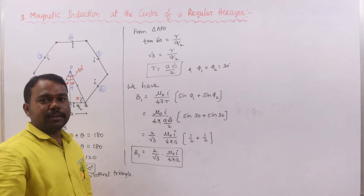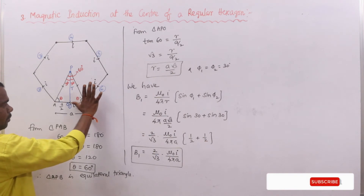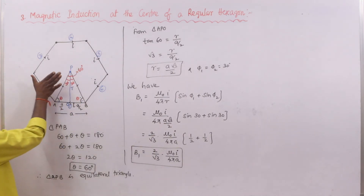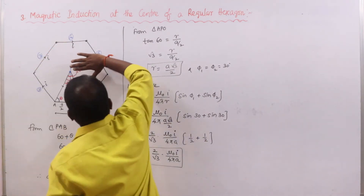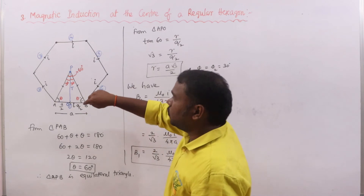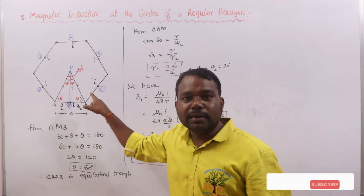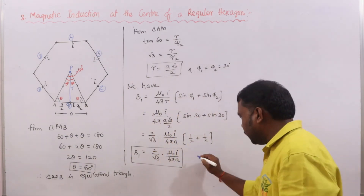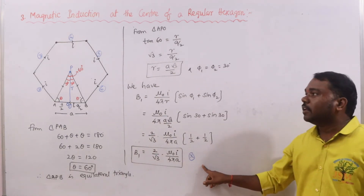Now look at the direction of this magnetic field. Using the right-hand rule, the thumb gives the direction of current from B to A, and the curled fingers at point P go inward. Due to the first conductor it is inward, and due to the second, third, fourth, fifth, and sixth conductors it is also inward. So the magnetic field due to all conductors is going in the inward direction, represented by the cross symbol.